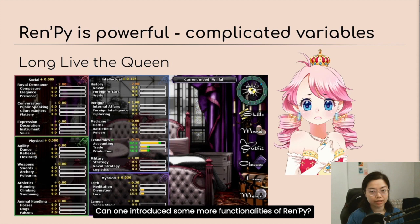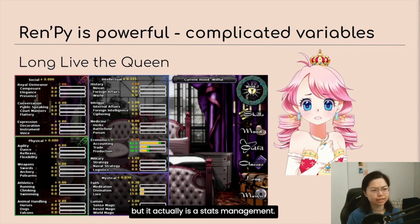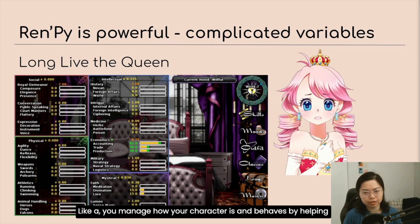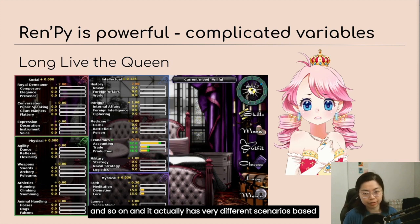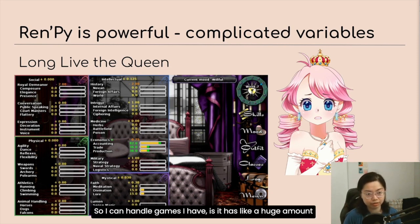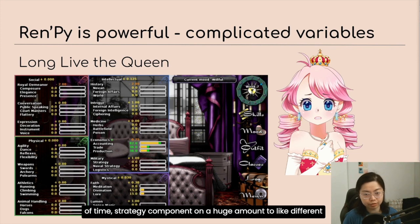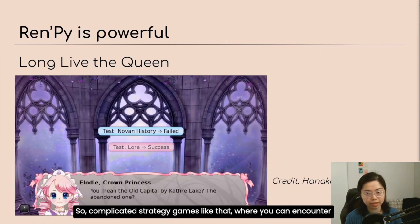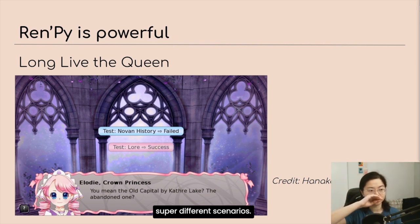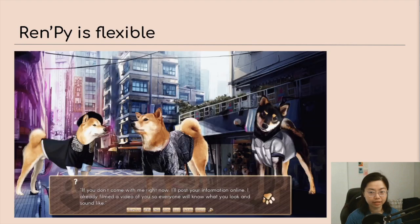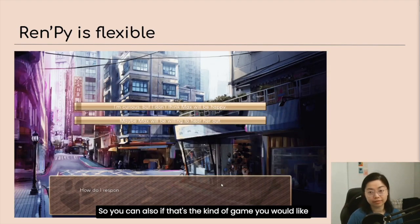I want to introduce more functionalities of RenPy. For example, Long Live the Queen is a visual novel game but it actually has stats management — you manage how your character behaves by helping them learn different things and interacting with different characters. It has very different scenarios based on what kind of stats you have and what previous paths you've created. RenPy can handle games with a huge strategy component and many different scenarios with complex interacting variables. Complicated strategy games where you can encounter very different scenarios have been made in RenPy.